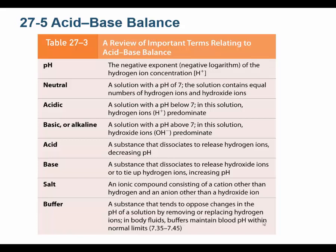pH means the negative log of the hydrogen ion concentration — that's what it means. Negative log really equals 1 over the log. So when you have 1 over something, as this number gets bigger — it's the denominator getting bigger — the pH gets smaller. As the hydrogen ion concentration gets bigger, the pH gets smaller because it's really 1 over the log of the hydrogen ion concentration.